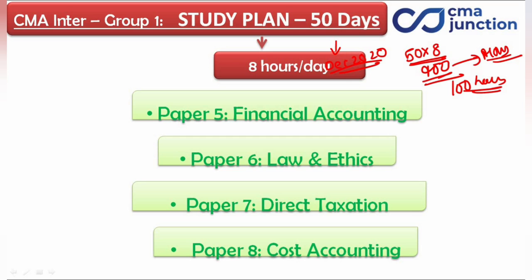We have paper number 5, 6, 7, and 8. Paper number 5 is Financial Accounting, paper number 6 is Law and Ethics, paper number 7 is Direct Taxation, and paper number 8 is Cost Accounting.